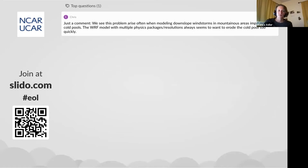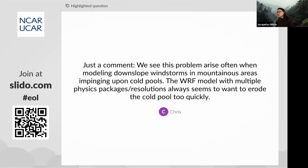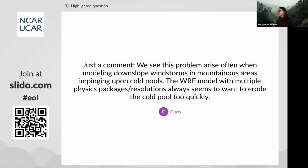We have a comment from Chris: we see this problem often when modeling downslope windstorms in mountainous areas impinging upon cold pools — the HRRR model with multiple physics packages and resolutions always seems to want to erode the cold pool too quickly. I think that is a problem in the Columbia River Basin too, but for this specific cold pool, except for the one version with the largest horizontal resolution, all other versions did a really good job in eroding the cold pool — they didn't erode it too quickly. The decay timing was really pretty good, which was a little surprising.